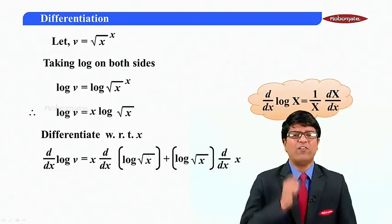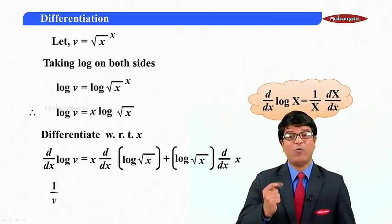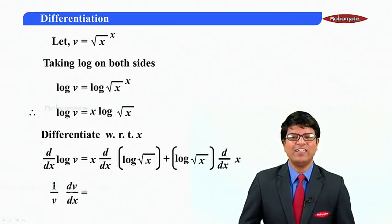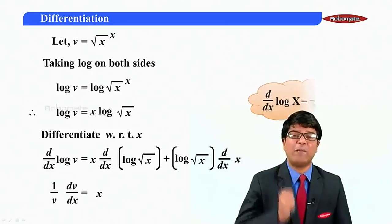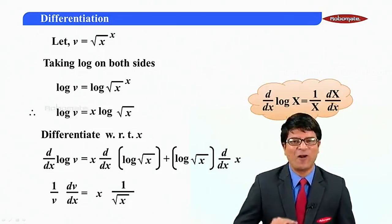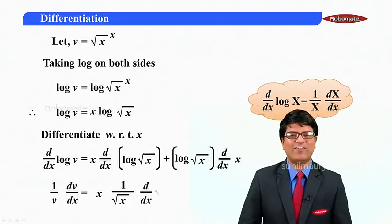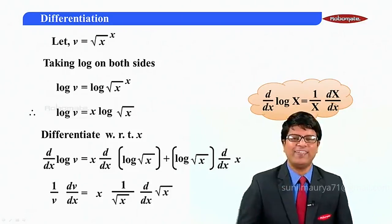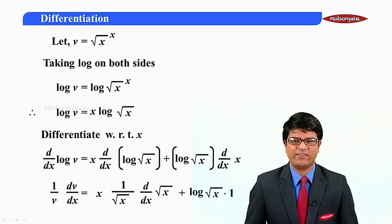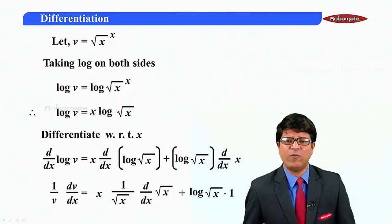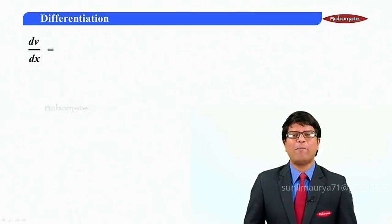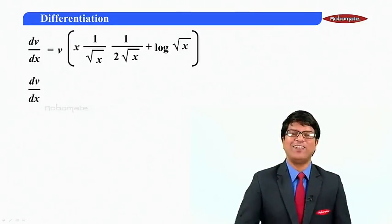The derivative of log v as a composite function gives one by v times dv by dx. For log root x, applying the composite rule to log x gives one by root x. What is replacing big x? Root x. So the derivative is one by root x times d by dx of root x, plus log root x as it is. The derivative of x is one.